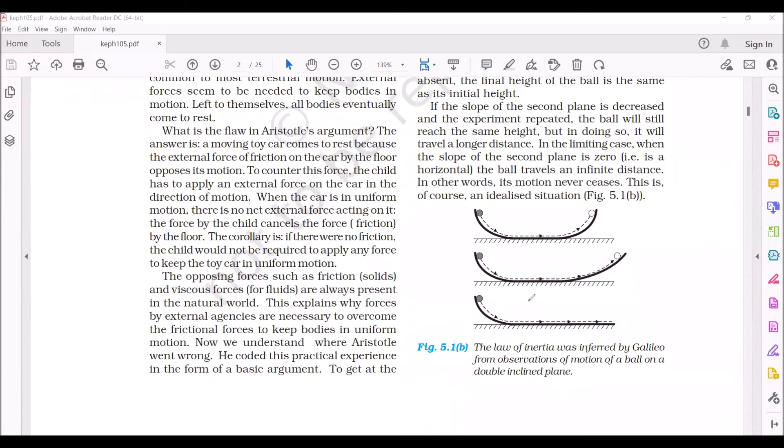Now in the third case, when the inclination of the doubly inclined plane, when the inclination of the second plane is brought near to the ground, the slope of the second inclination is zero. Then when the ball starts from rest, it accelerates towards the ground.